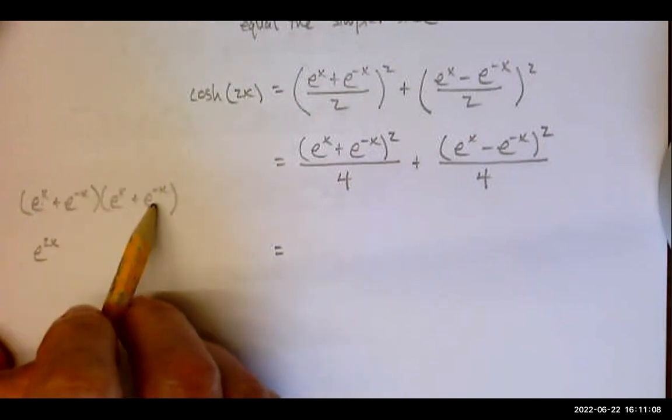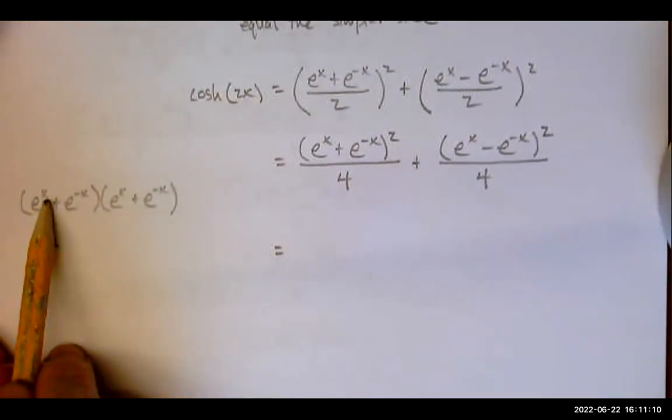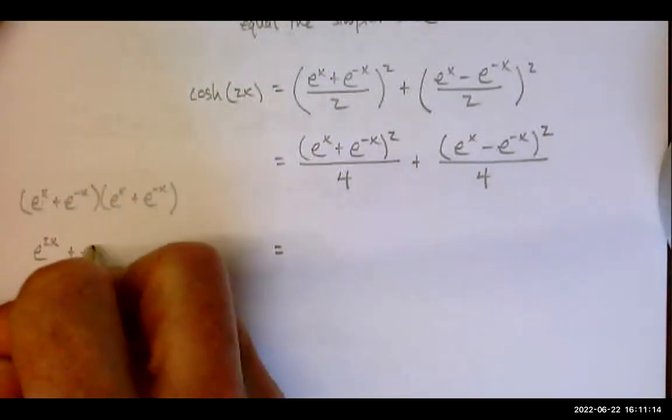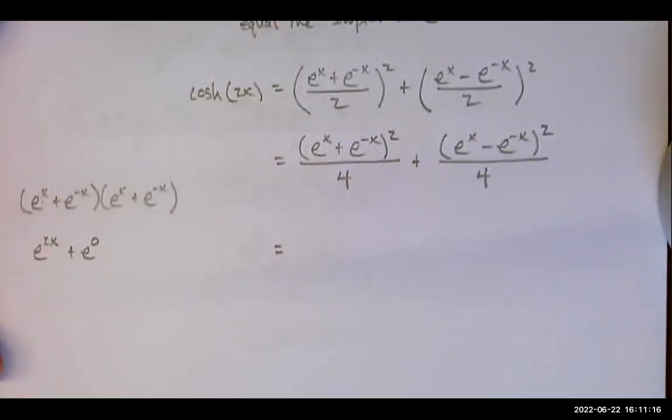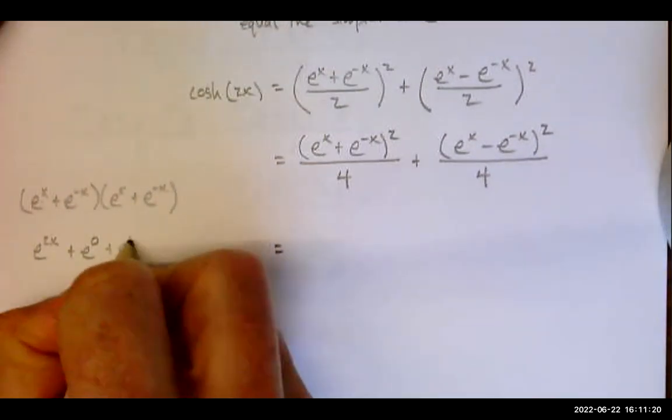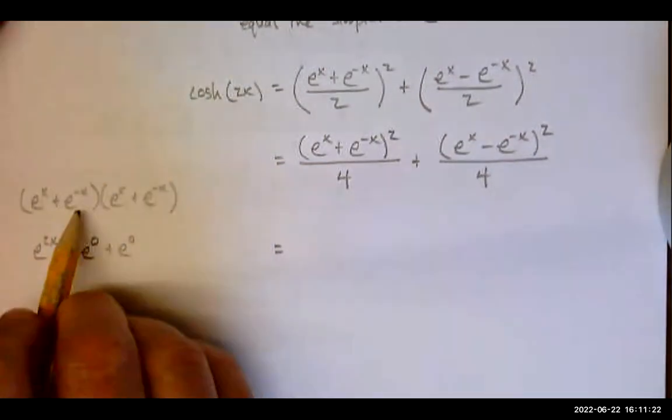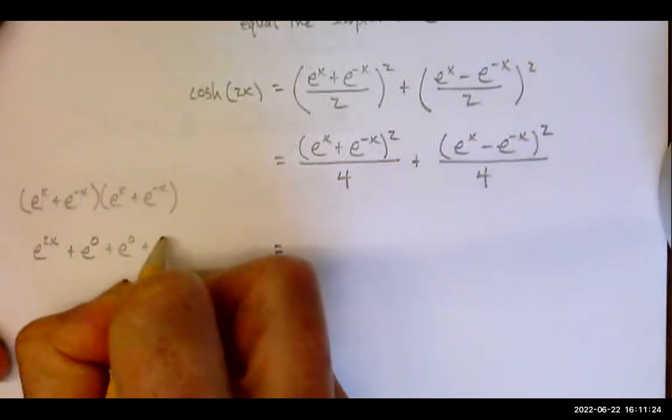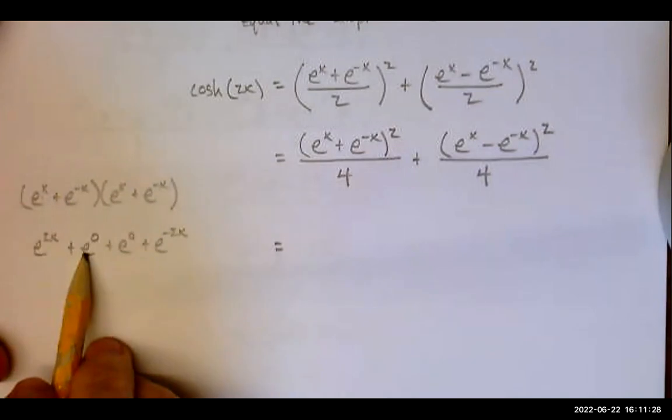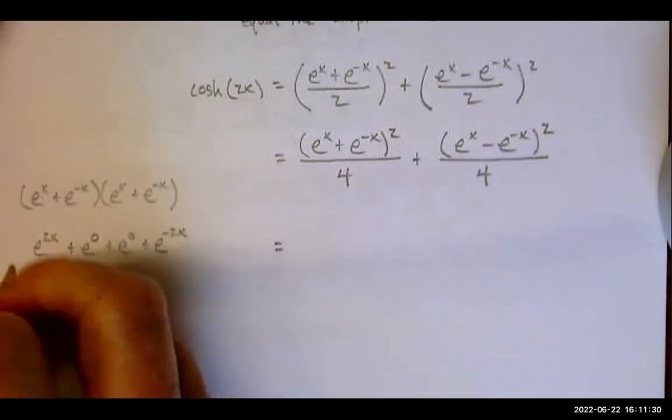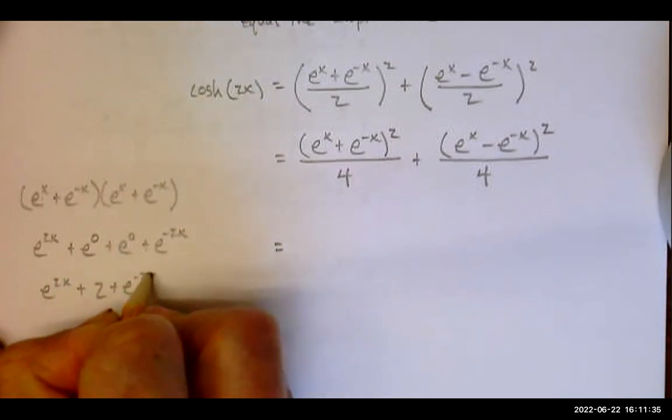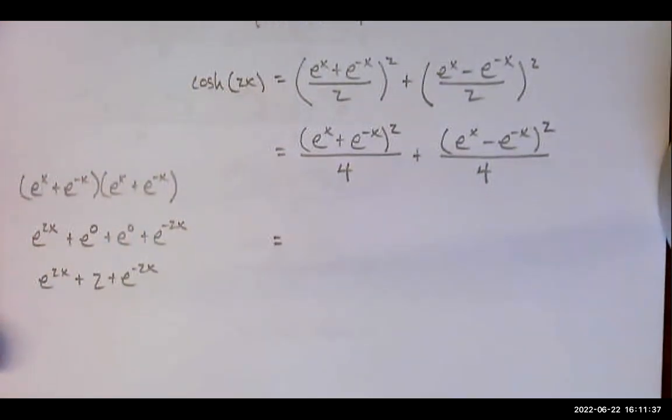e to the x times e to the negative x, we're going to add exponents, but notice x plus negative x is plus e to the zero. Same thing with the inside, plus e to the zero. And then finally, plus e to the negative 2x. Well, what is e to the zero? It's one. So this would be e to the 2x plus one plus one plus two, and that's how it would multiply out.